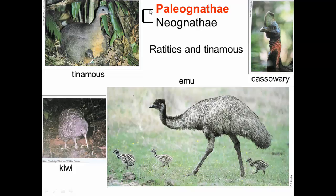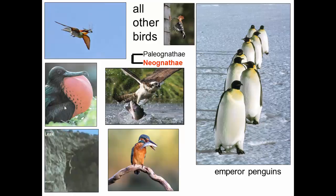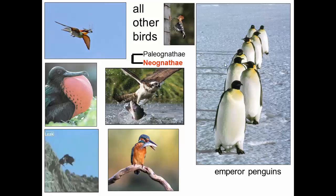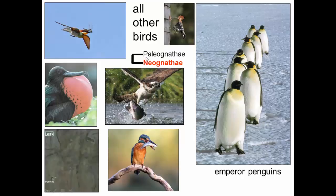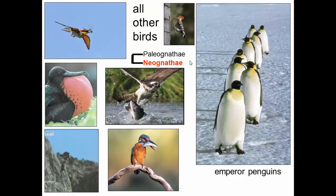Palaeognathae are sometimes considered the basal group of birds, including ostriches, emus, cassowaries, kiwis, and the tinamou. These are flightless and often larger than many other birds. Neognathae is basically all the other birds — frigate birds, ospreys, penguins, and so on. This group is quite speciose, with many more species than Palaeognathae. This group evolved from theropod dinosaurs; the theropod dinosaurs have all gone extinct, but the birds remain. Depending on how you classify things, you can correctly consider birds to be dinosaurs.